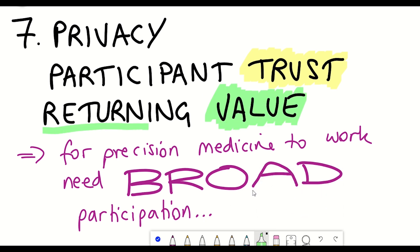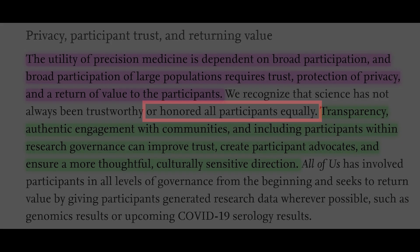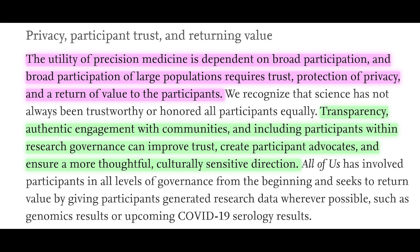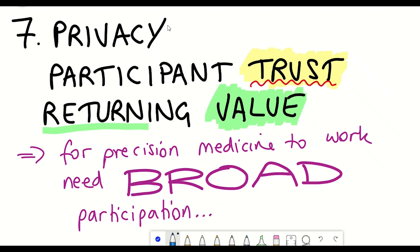And so in many ways, this is possibly one of the hardest challenges of achieving precision medicine, given the fact that science has not always been trustworthy or honoured all participants equally. So it's hoped that with increased transparency and authentic engagement with communities, this can improve trust and create participant advocates and ensure a more thoughtful, culturally sensitive direction. And in terms of being able to keep the data secure and private, it seems very likely that access control via blockchain and the use of hashed identifiers to be able to link the data and other encryption processes to be able to analyse the data will definitely play a key role.